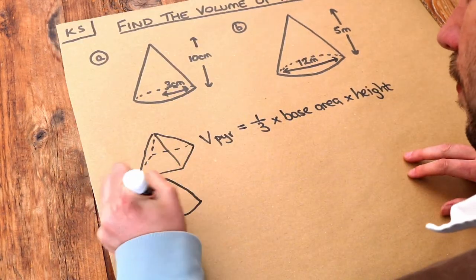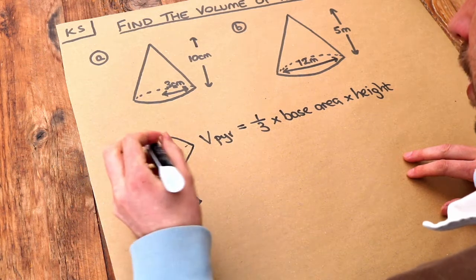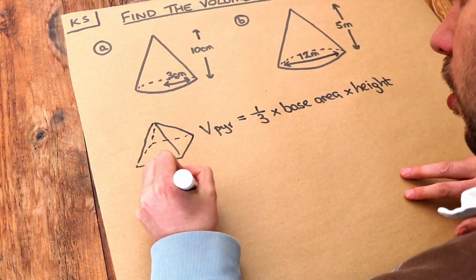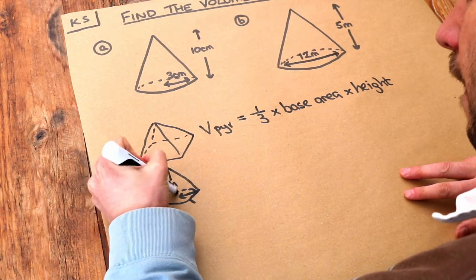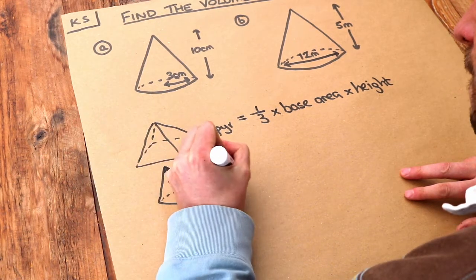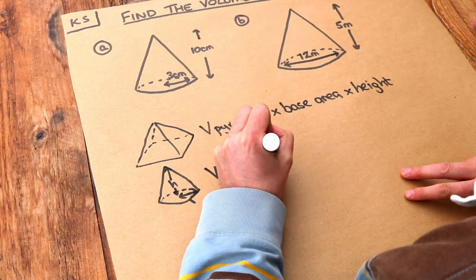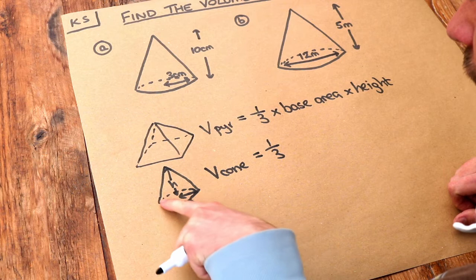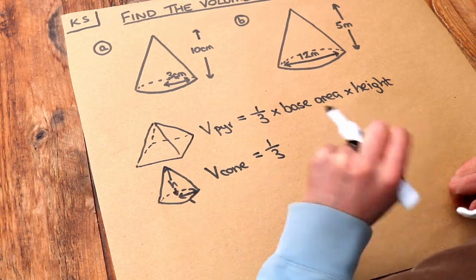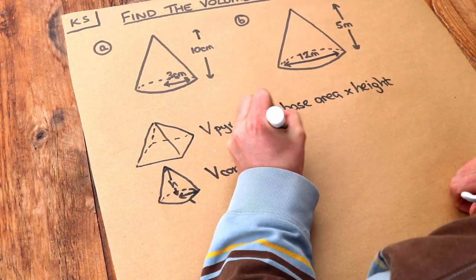So the volume of the cone, if you have a radius r and a height h, is going to be a third times the area of the base. If you've got a circle of radius r, we know the area of a circle is πr², so it's a third times πr².